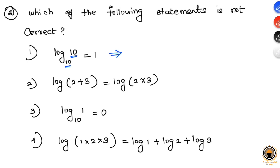The reasoning is that any number raised to the power 1 equals that same number. So 10 to the power 1 equals 10. Since the base and number are the same, the logarithm is always 1.